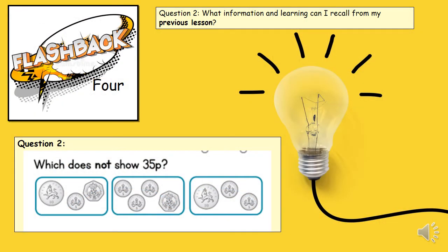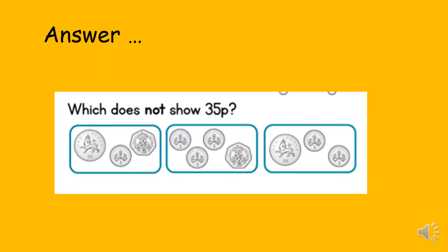We've been learning about money before Christmas in Year Two. Children need to recognise coins and understand the value of each coin. Then they can begin to add the coins and add amounts, and then find the change. Here is a challenge: which picture does not show 35 pence? It's very important that children read the questions carefully. The final group does not show 35 pence, while each of the other two groups show 35 pence with different coins.